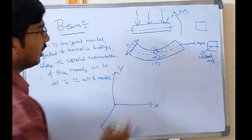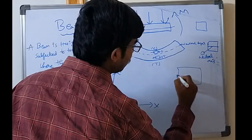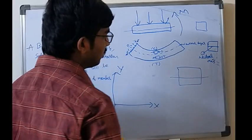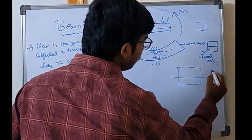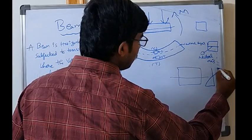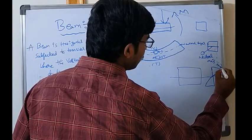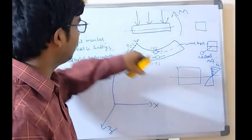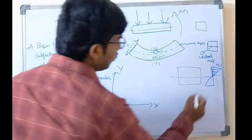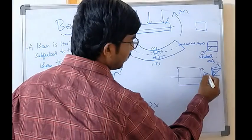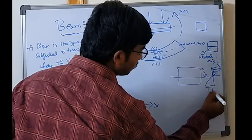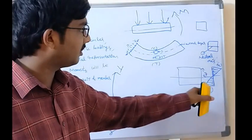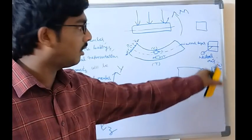Due to this bending, there will be bending stresses. If you take this cross-section, the neutral layer is here. The bottom-most part will be subjected to compressive stresses and the top-most part to tensile stresses. As you go near the neutral axis, the bending stress becomes zero. As you go from the topmost fibers, the bending stress will be maximum. Compressive stresses are represented by a left arrow and tensile stresses by a right arrow. This is the bending stress diagram.